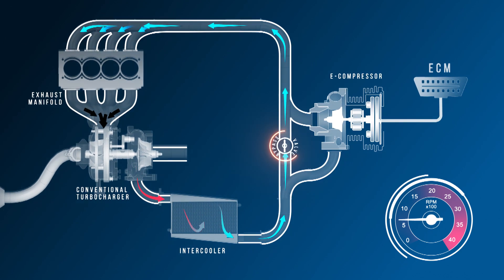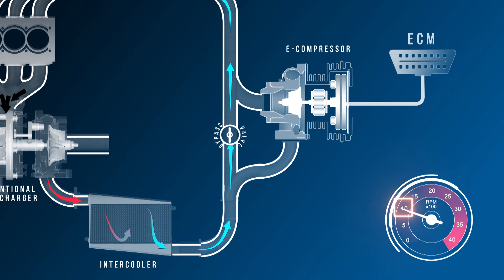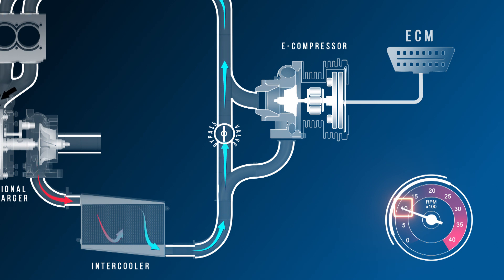As throttle is applied and engine RPM increases, a transition effect takes place. On initial acceleration, as engine revs increase to above idle speed, the bypass valve begins to close, directing some charge air through the e-compressor. Essentially, at this point the e-compressor and the turbocharger are briefly running in parallel.